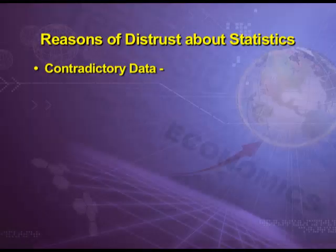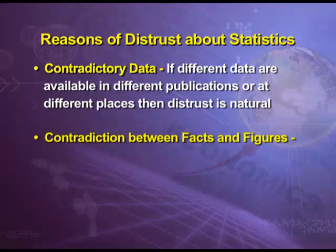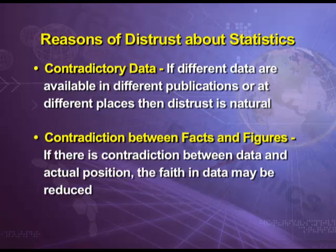The main reason is contradictory data. If different data are available in different publications or at different places, then distrust is natural. The second reason is contradiction between facts and figures. If there is contradiction between data and the actual position, faith in data may be reduced. For example, if it is being felt in general that prices are increasing but the government shows with data that the price level is going down, then there will definitely be distrust upon that data.